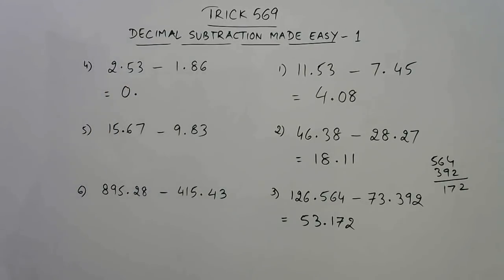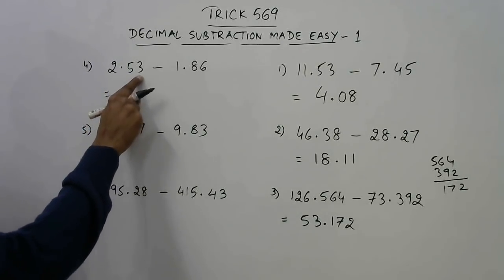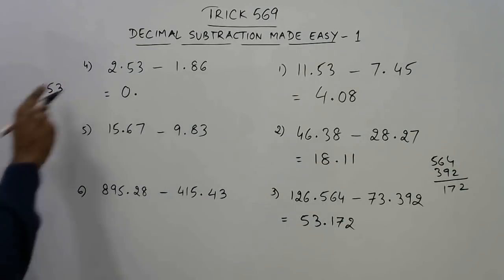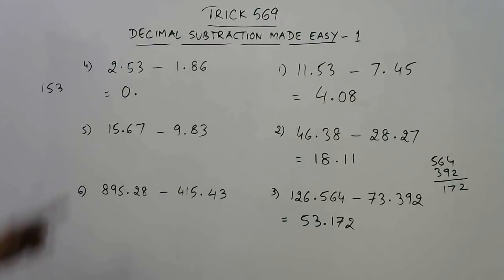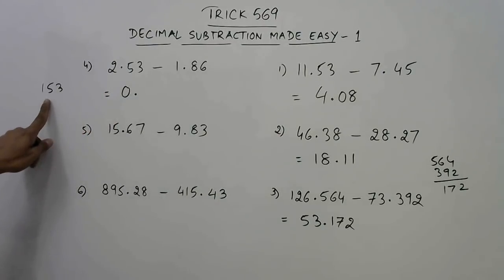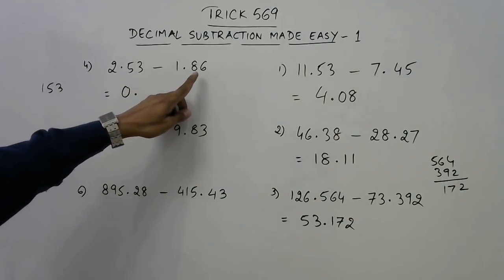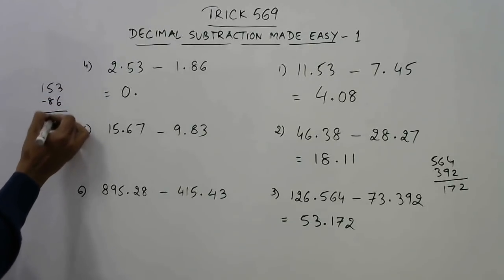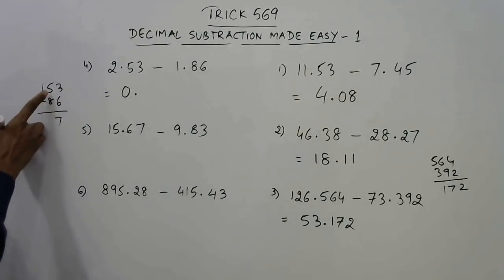And what happens after decimal? This 53 becomes 153. So you need to prefix 1 before the number after the decimal place. Here 53, so it becomes 153. And now subtract the number here after the decimal, that is 86. So just subtract these two: 13 minus 6 is 7, and 14 minus 8 is 6. So 67 will come after the decimal.